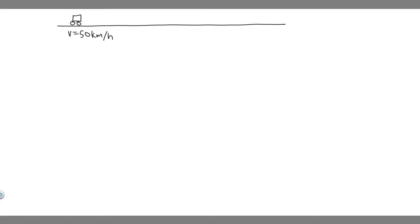In this problem, we're told a car is traveling 50 kilometers per hour on a flat highway. If the coefficient of friction between the road and tires on a rainy day is 0.1, what is the minimum distance in which the car will stop? And what is the stopping distance when the surface is dry and the coefficient of friction is 0.6? So we have two different scenarios — one where it's raining, one where it's not — and we're trying to find the stopping distances for both.